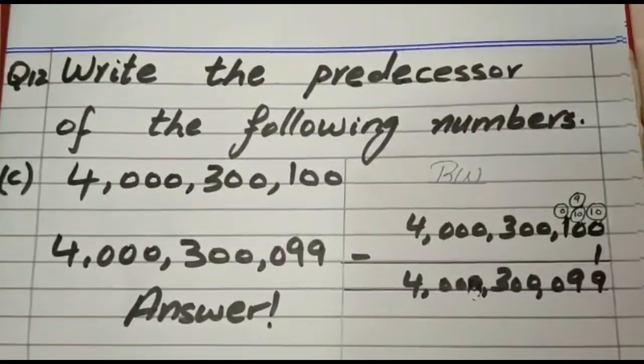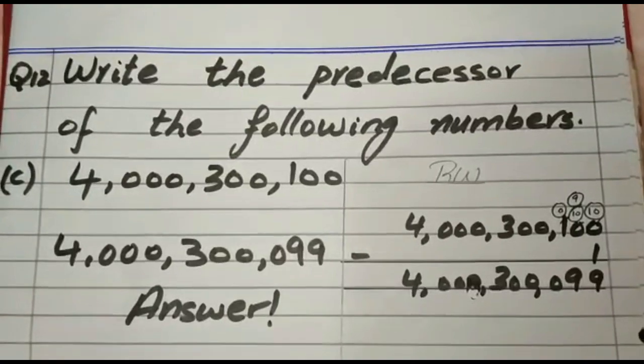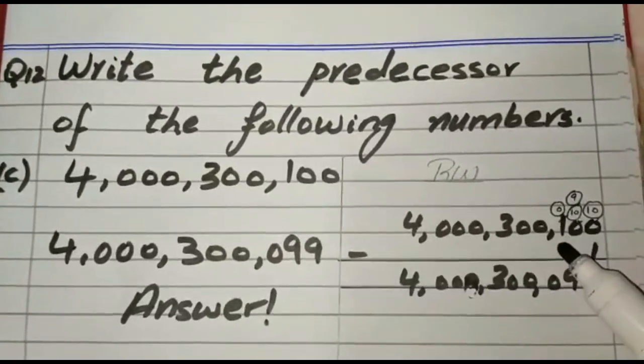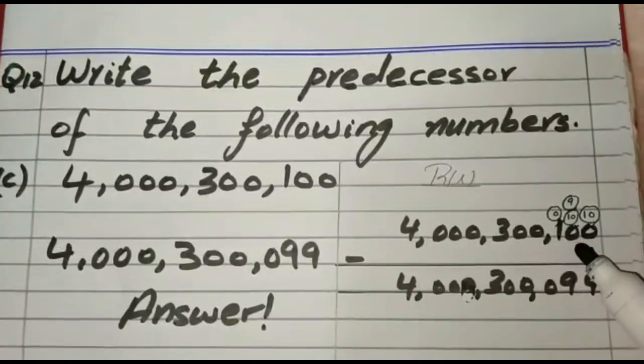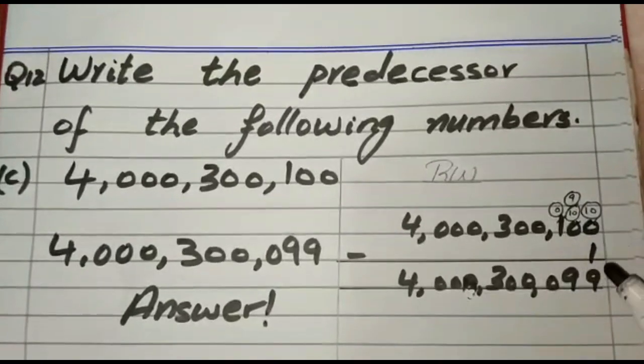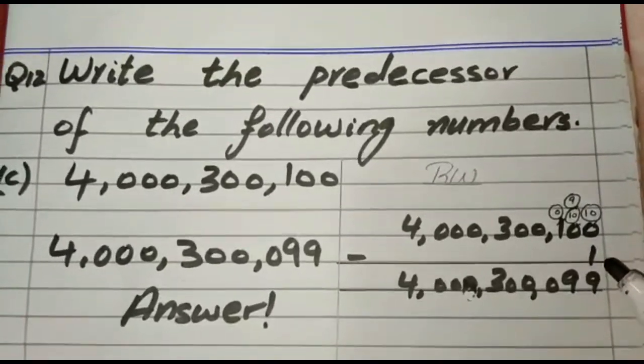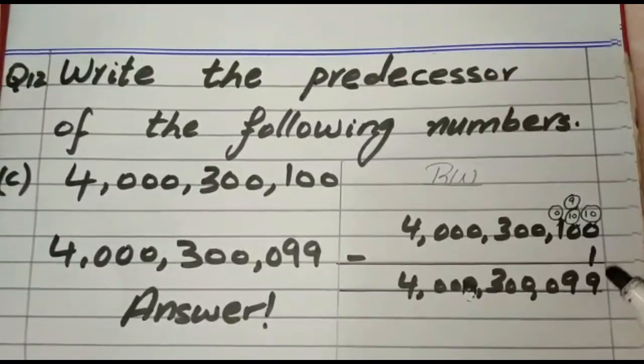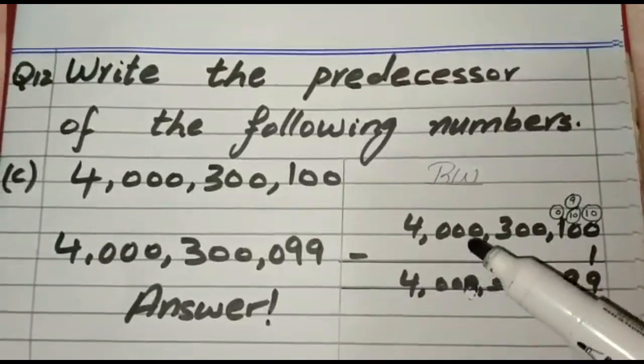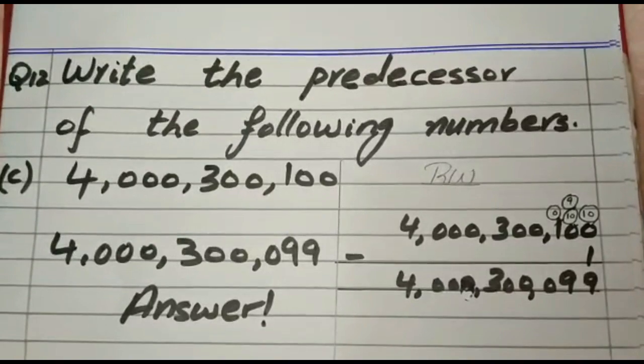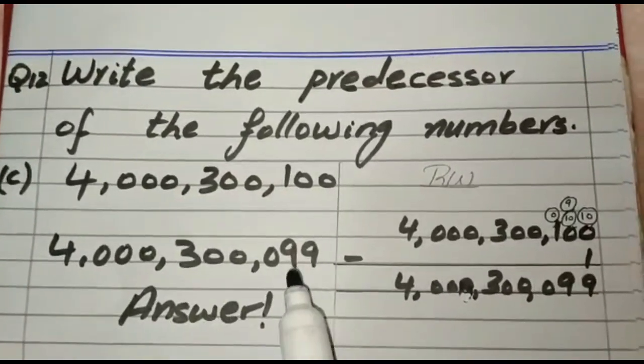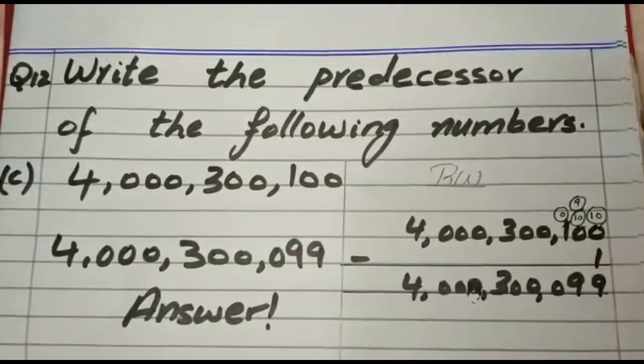Now let's subtract. Can we subtract 1 from 0? No. We have to take borrow from 1. Here 0 will be left. This will become 10. This will give 1 borrow to this 0. It will become 10 and it will become 9. 9 and 0. 0, 0, 3, 0, 0, 0, 0 and 4. So the predecessor of this number is 4,000,300,099.